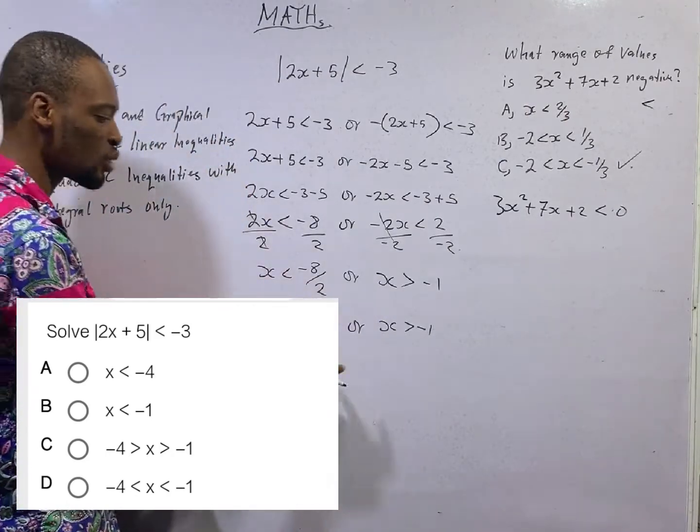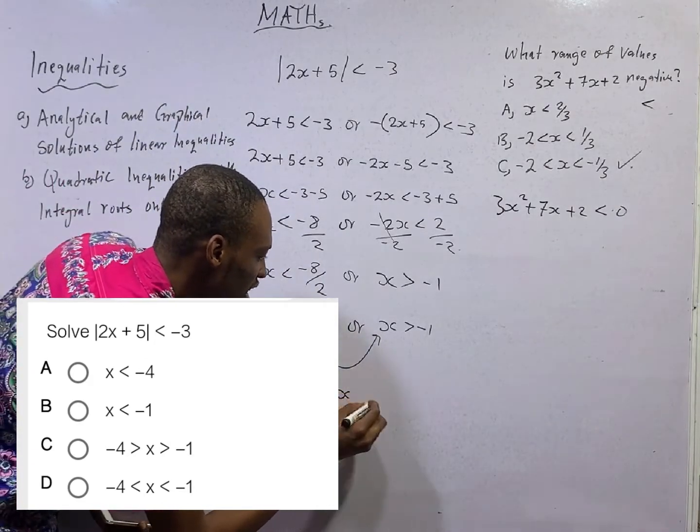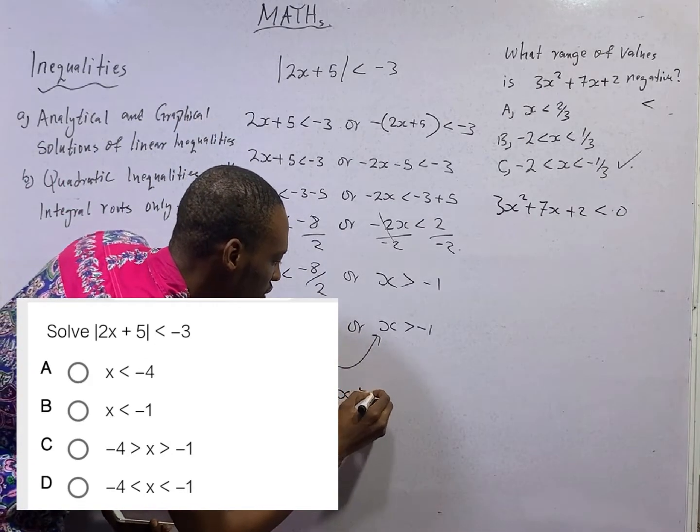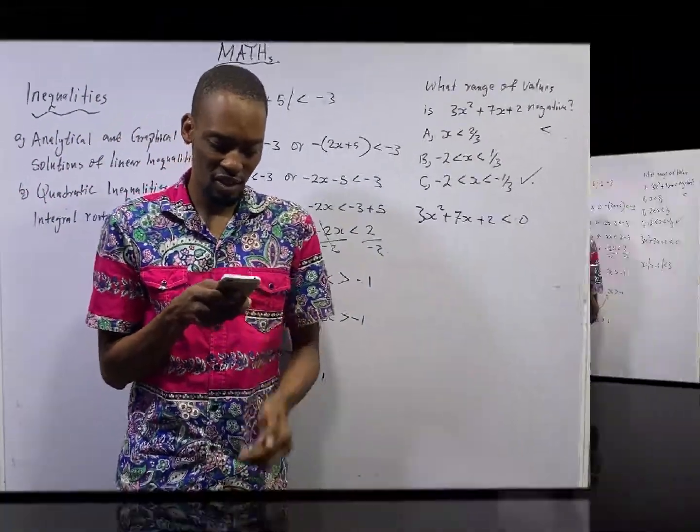Then you add it to the other one. To have minus 4 is greater than s. And s is greater than minus 1. So option C is the correct option.